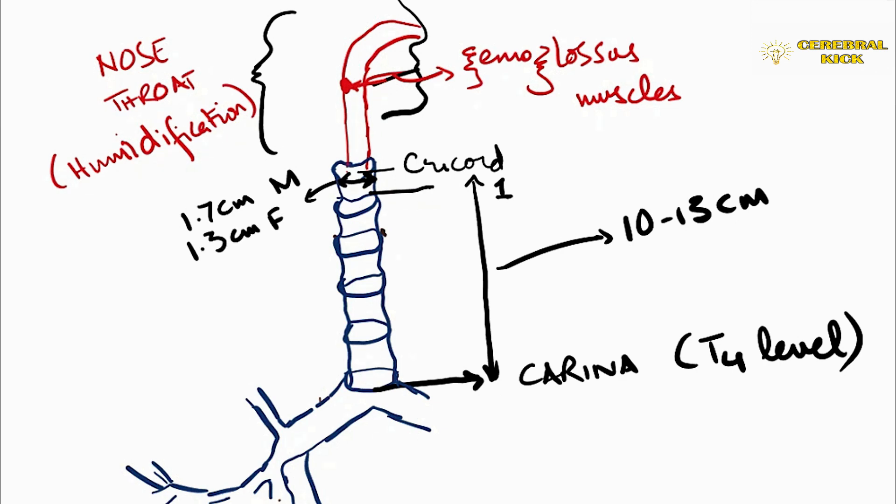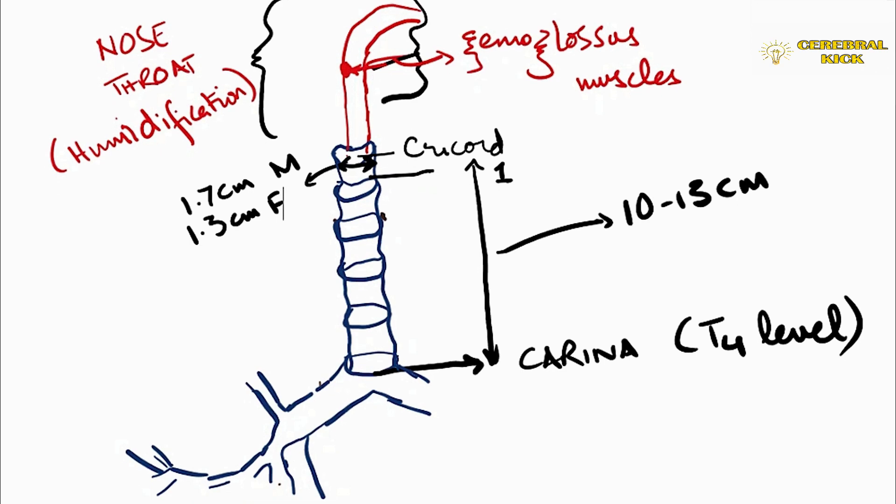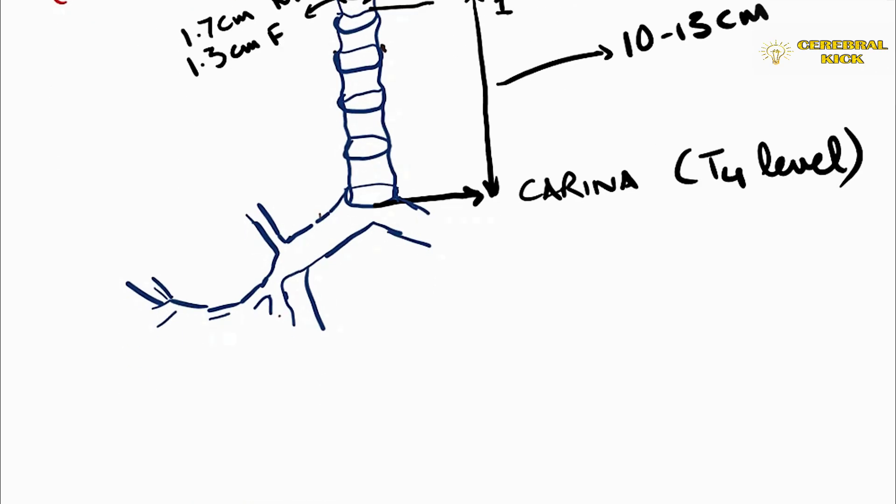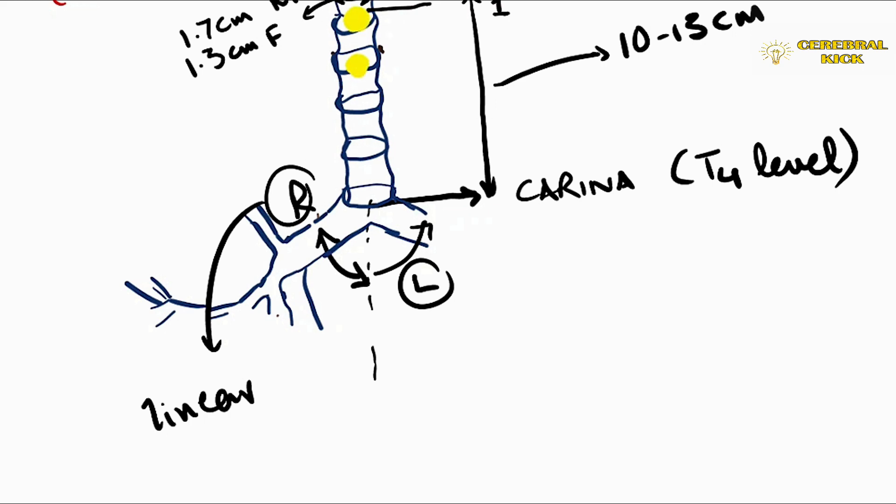In children, the subglottic area is the narrowest one. The right bronchus is more linear compared to the left bronchus which is more acute, as a result of which whenever an object or foreign object is aspirated, chances of it going into the right lower lobes of right lung are more compared to the left lung.